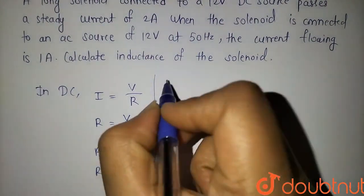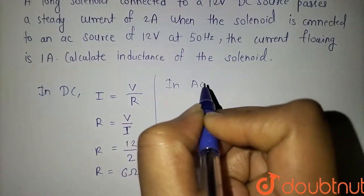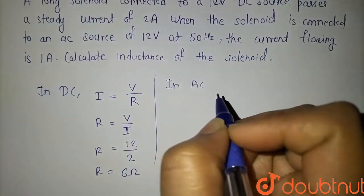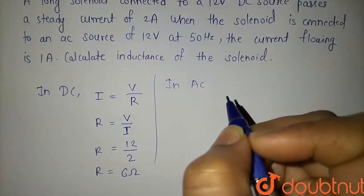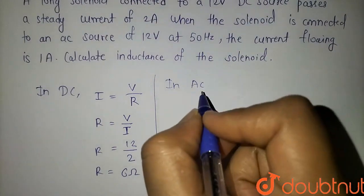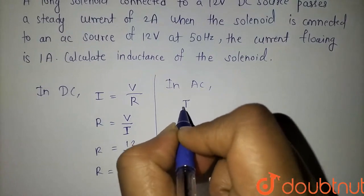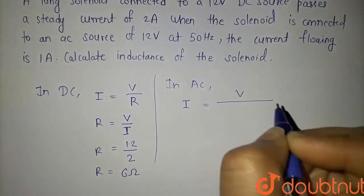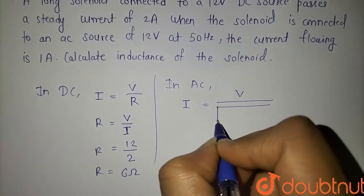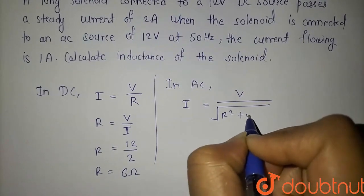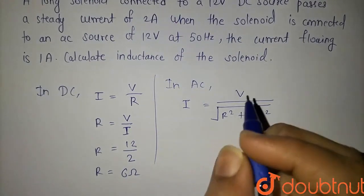But in AC, the reactance will also come into the picture. So how will we write the current? Voltage divided by the impedance, which is square root of R squared plus omega squared L squared.